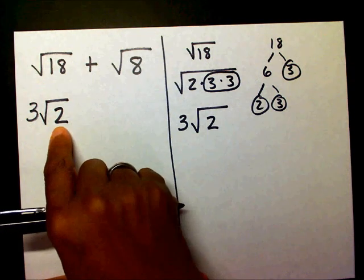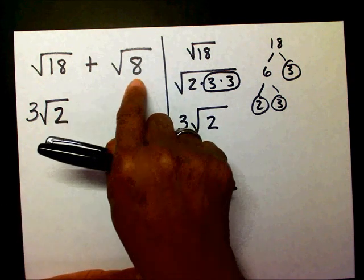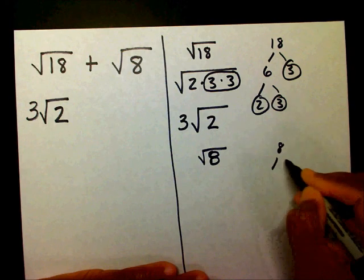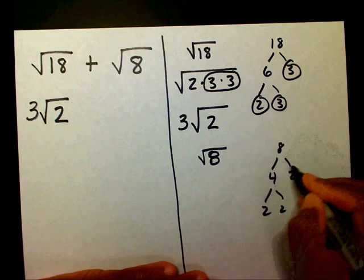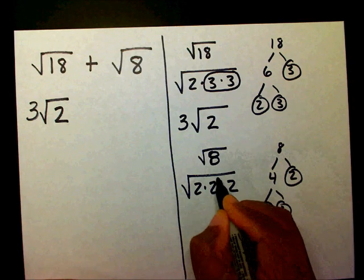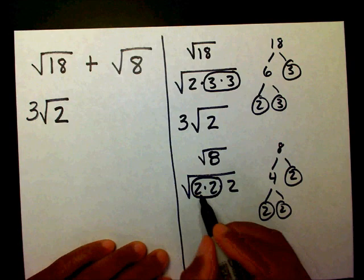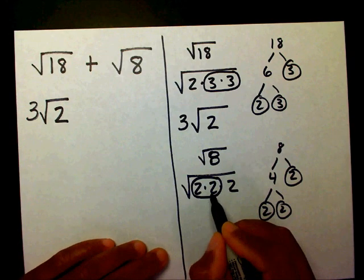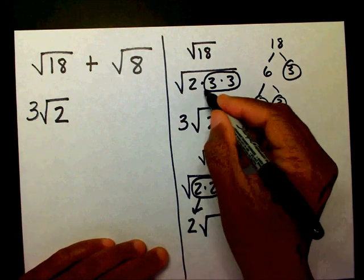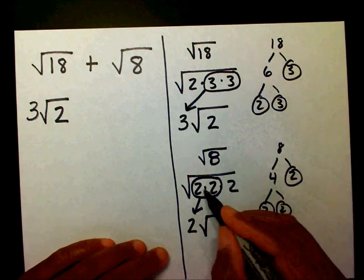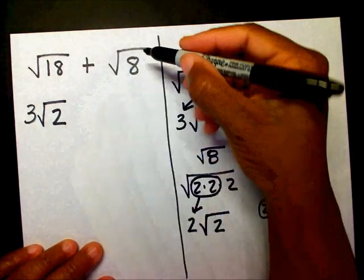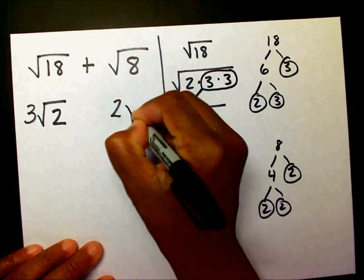Now my radicands are two and eight. Let me see if I can simplify radical eight. I'll make a factor tree for eight: that's four and two, and two and two. So that's radical two times two times two. I circle my two pairs — two times two is four, and the square root of four is two. That goes on the outside, and two goes inside. So instead of writing radical eight, I can write two radical two.